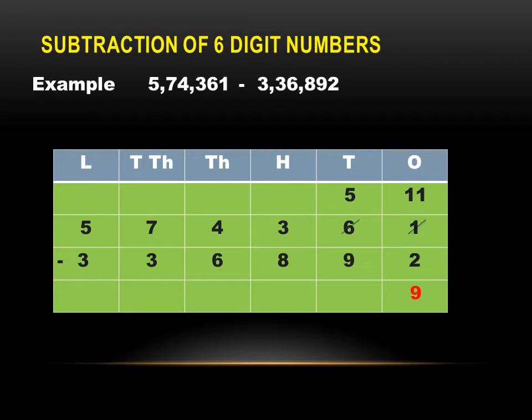Subtract one minus two. As one is smaller than two, it is not possible to subtract two from one. So one will be borrowed from the tens place. At the ones place it will become eleven, and at the tens place we will have five. Now eleven minus two is equal to nine.